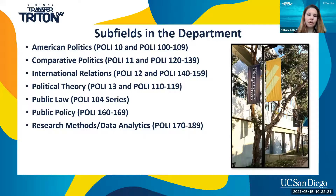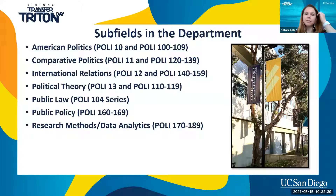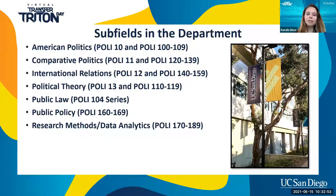We have a couple of different subfields, and the numbers or notations you see to the right correspond to the classes that fall under that subfield. This gives you an idea of what to look for on the campus catalog. If you're interested in public policy, look at classes starting with POLI 160 through 169. For comparative politics, look at POLI 11 as the intro course, and POLI 120 to 139 for upper division.